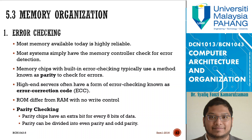Memory chips with built-in error checking typically use a method known as parity to check for errors. High-end servers often have a form of error checking known as Error Correction Code, ECC. Usually these are conducted in your main memory. When purchasing main memory, you need to be careful not to buy the ECC version for a normal motherboard, as ECC RAM will not work under a normal motherboard. Server motherboards have this error correction code capability on the RAM.